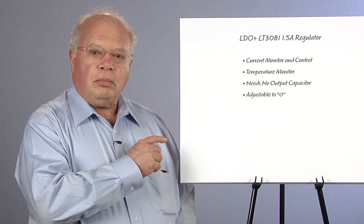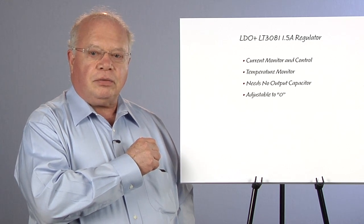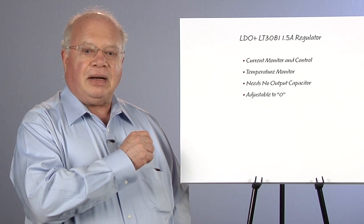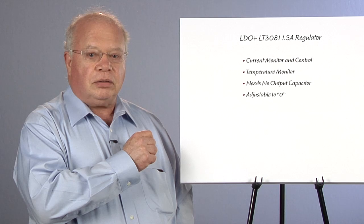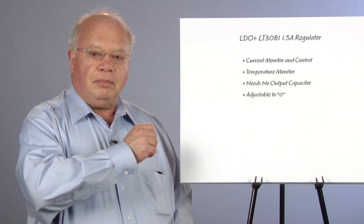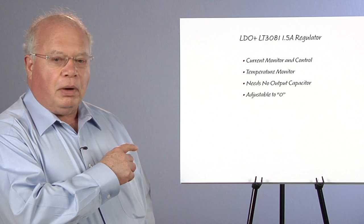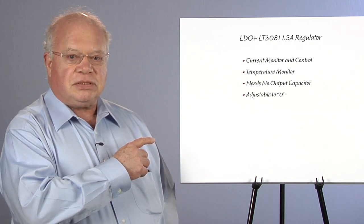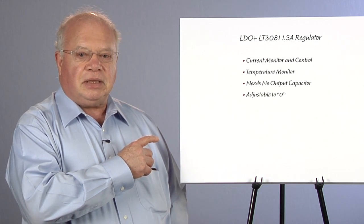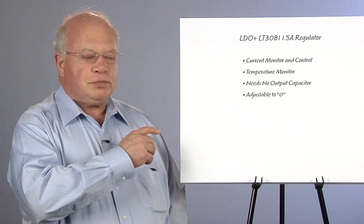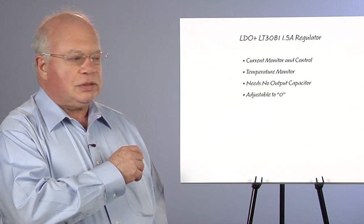In addition to regulating, it has a current monitor output so you can look at the current through the regulator and an external resistor will set the current limit down below the max output current. It's got a temperature output so you can monitor the temperature of the system. That makes it really easy to debug a system when you're first putting it together as well as make sure it's operating right.